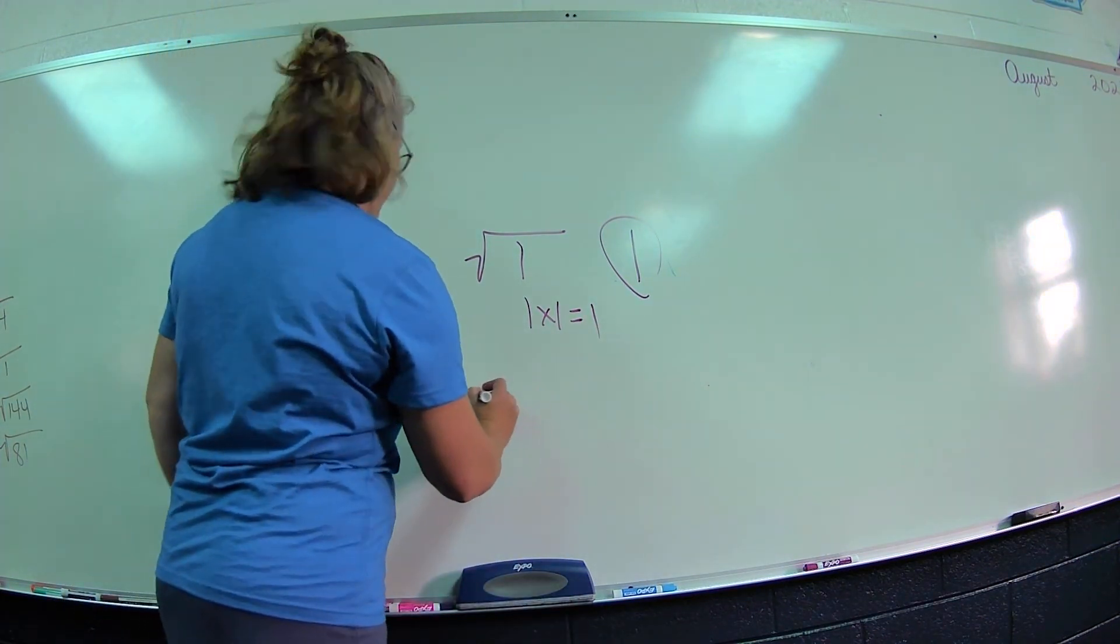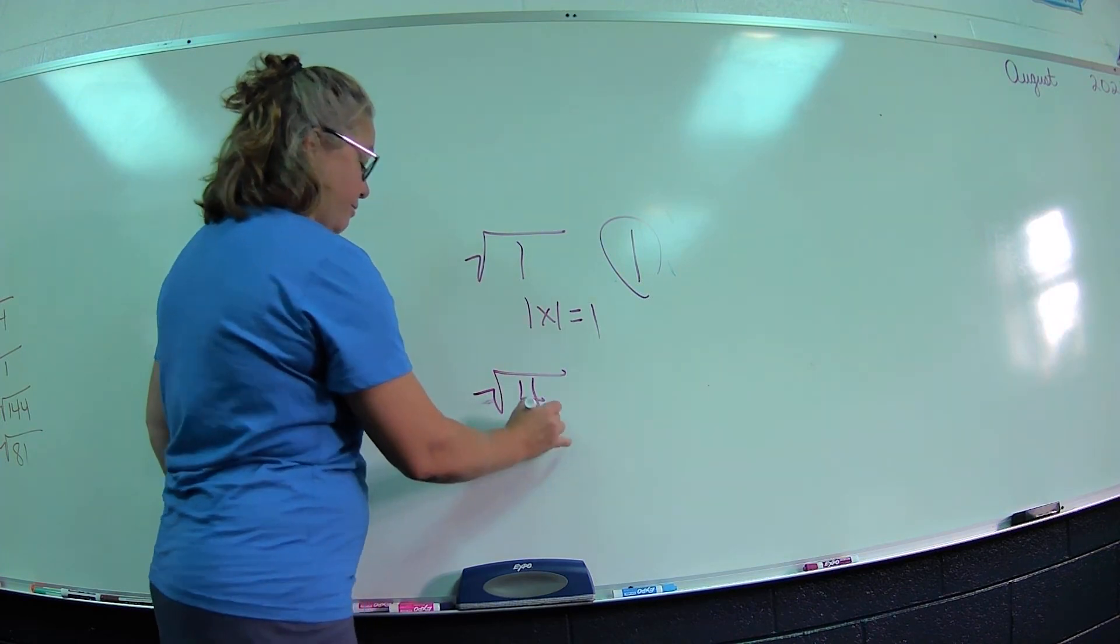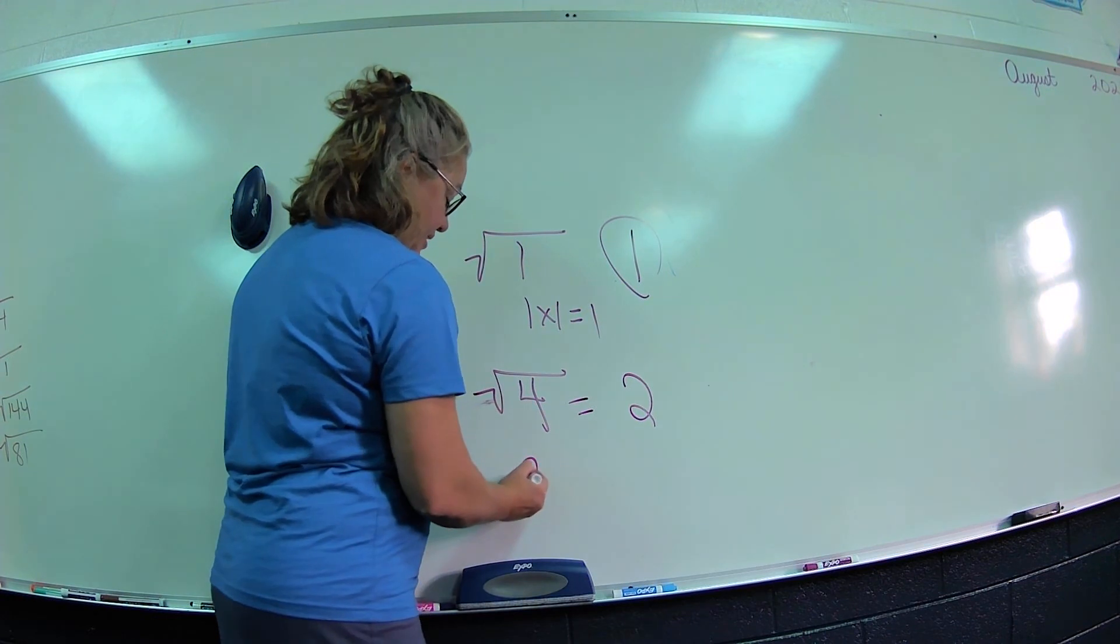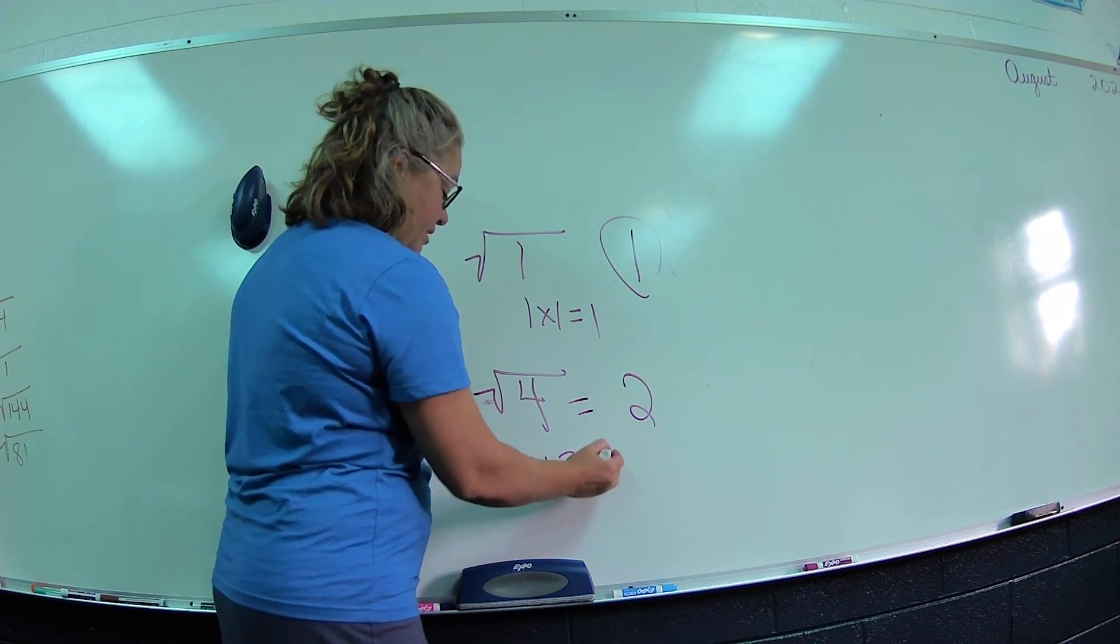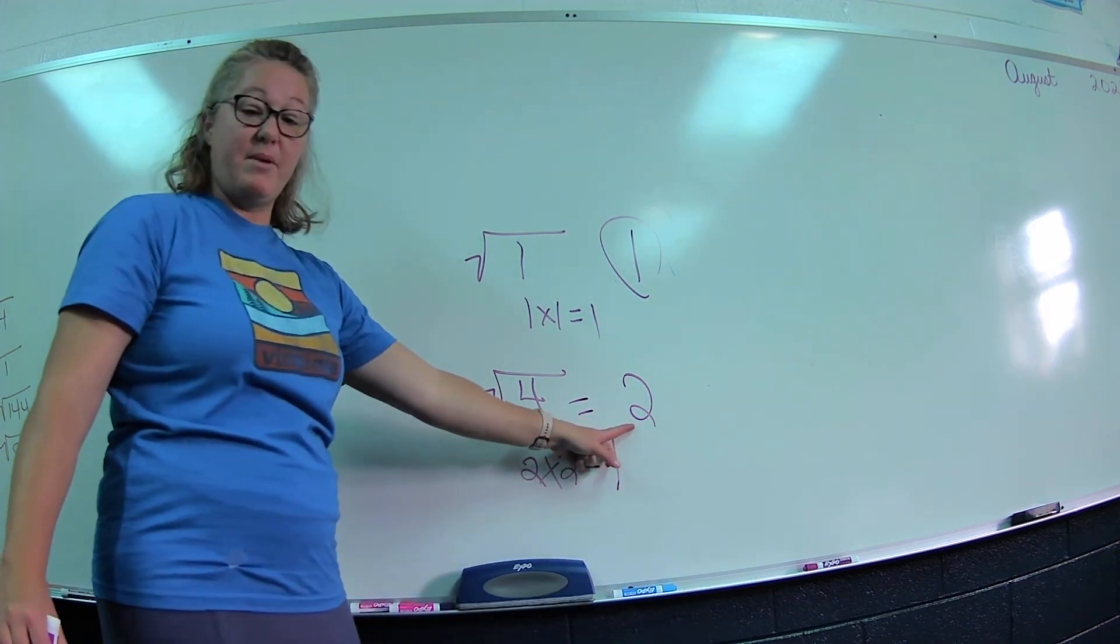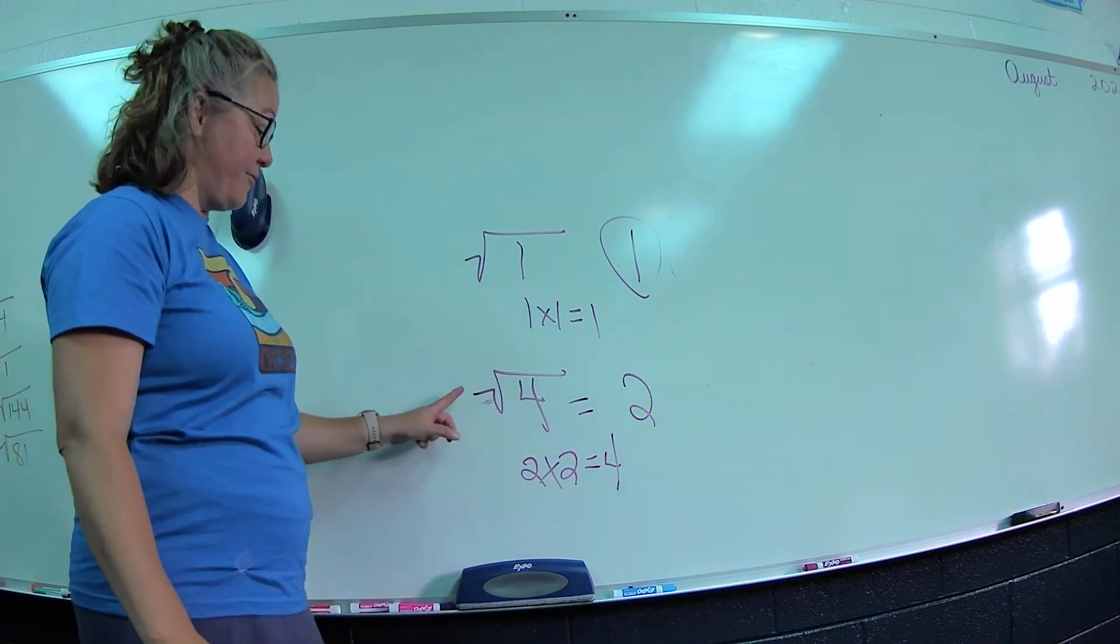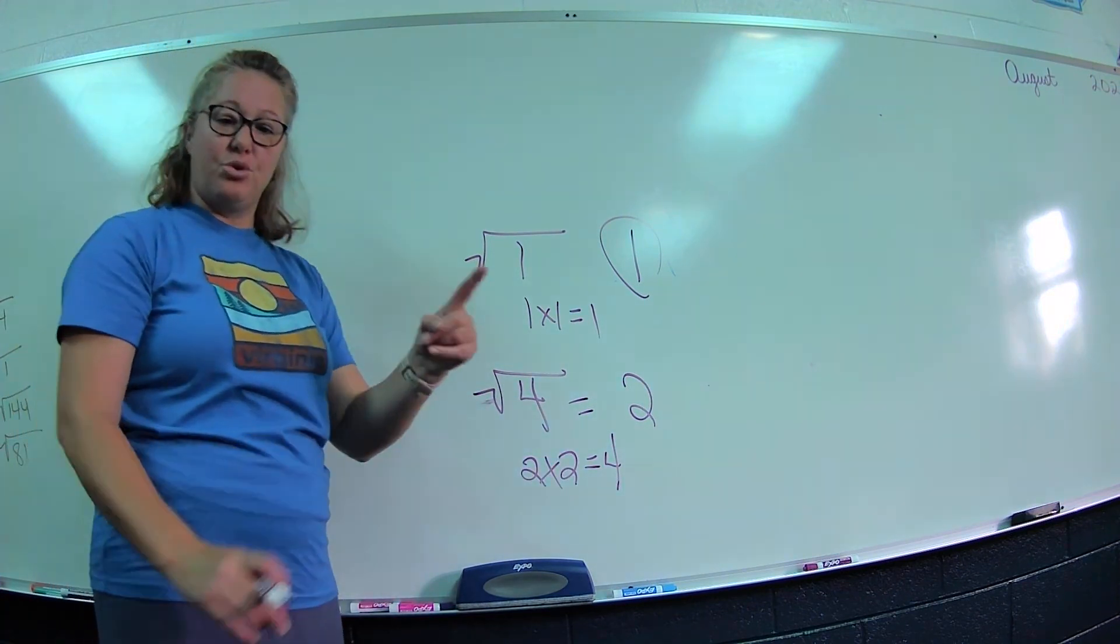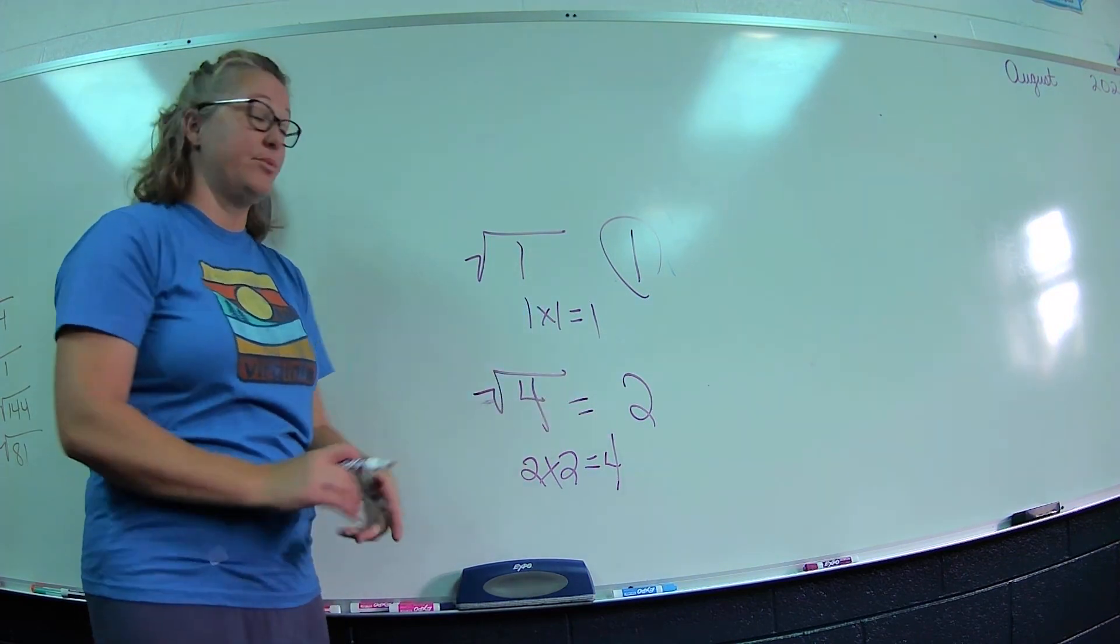Let's try the square root of 4 is 2 because 2 times 2 equals 4. So 2 would be my base, so therefore it's the square root. Just a quick lesson on squares and square roots.